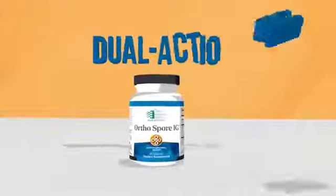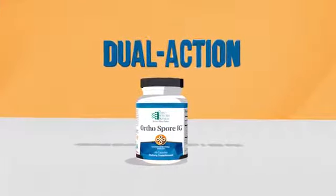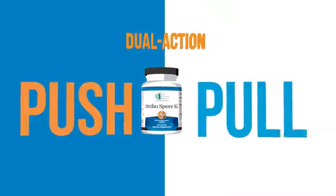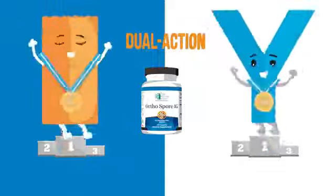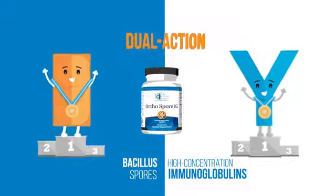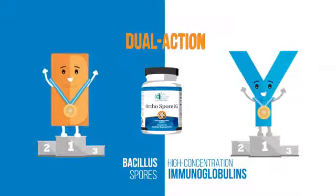Orthospore IG is a dual-action solution for SIBO. Its targeted push-pull approach gently restores the gut terrain and is driven by two champions of GI health: Bacillus spores and high-concentration immunoglobulins.